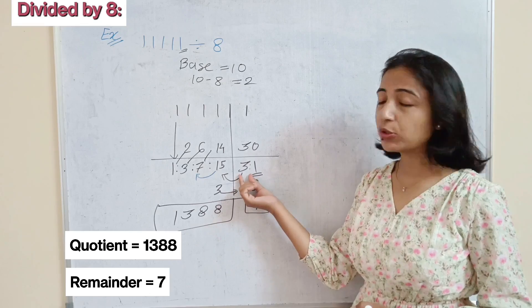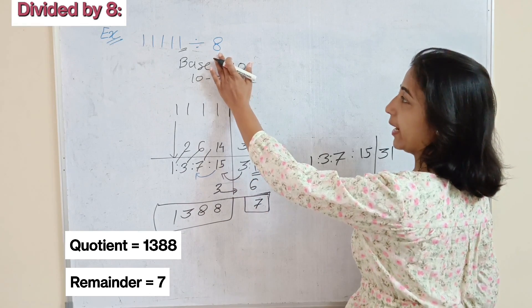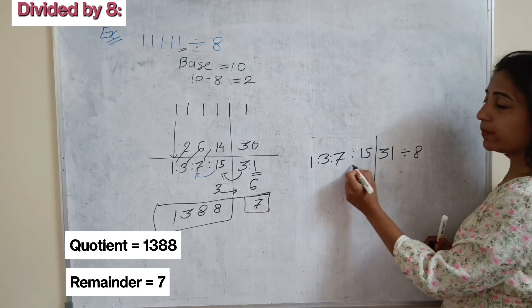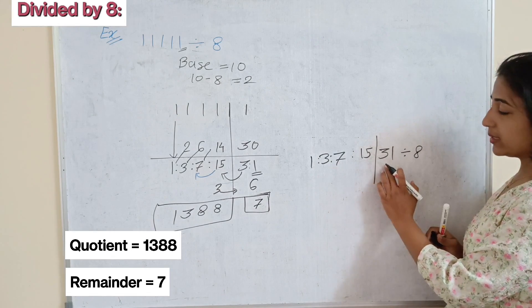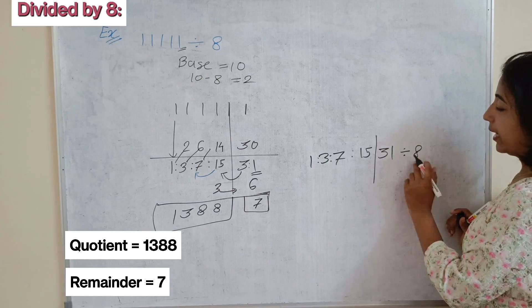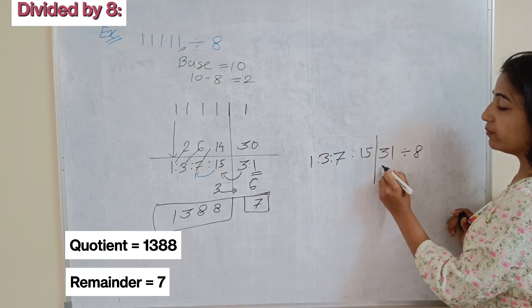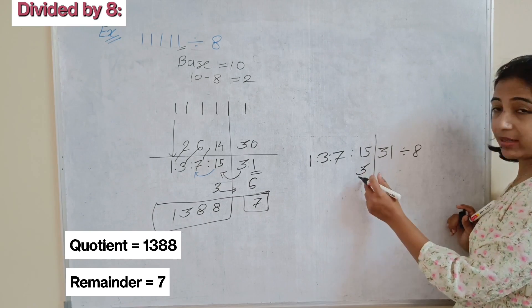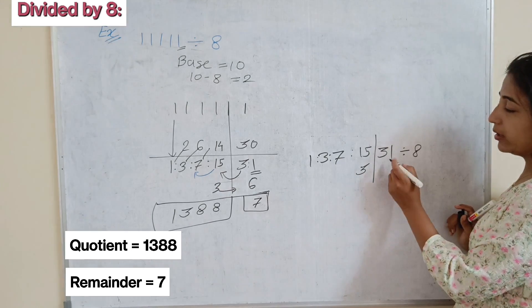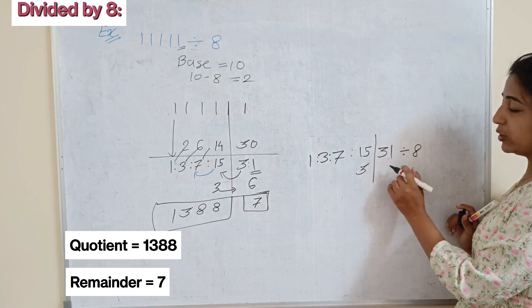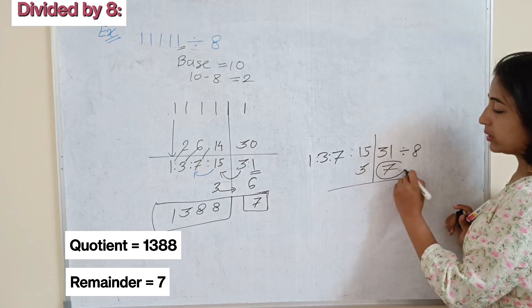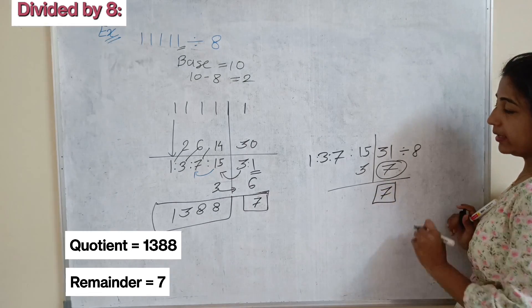Alternatively, if you don't want to break the number again, since we are dividing by 8, you can divide 31 directly by 8. The left part represents the quotient and the right part the remainder. If we divide 31 by 8: 8 times 3 is 24, so 3 is the quotient and 31 minus 24 is 7.